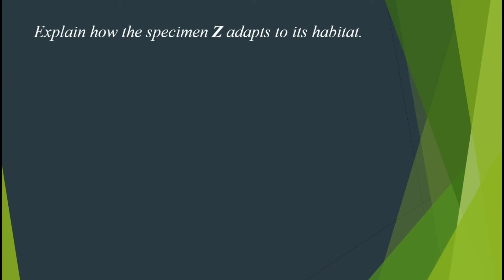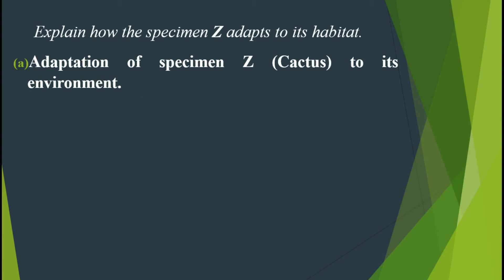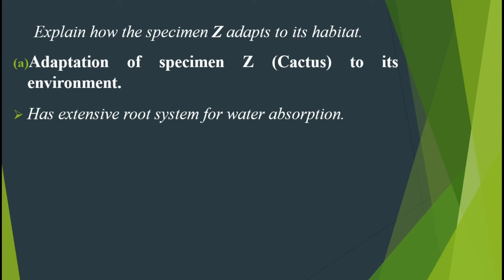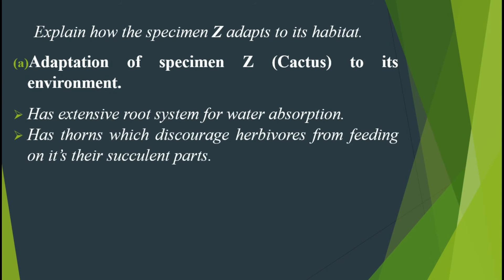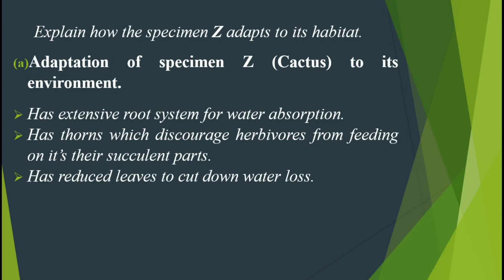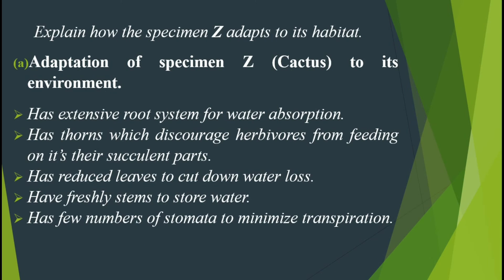Now the question is also asking us to explain how specimen D adapts to its habitat — that is, what are the adaptations of specimen D? The following are the adaptations of the cactus plant: it has an extensive root system for water absorption; it has thorns which discourage herbivores from feeding on its succulent parts; it has reduced leaves to cut down water loss; and it has a fleshy stem to store water. It also has a few number of stomata to minimize transpiration.